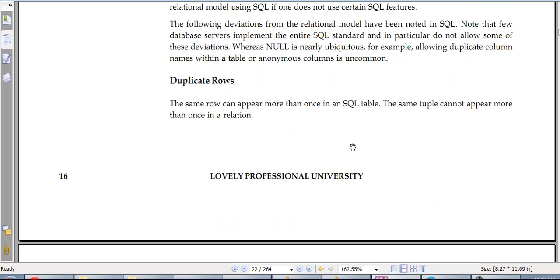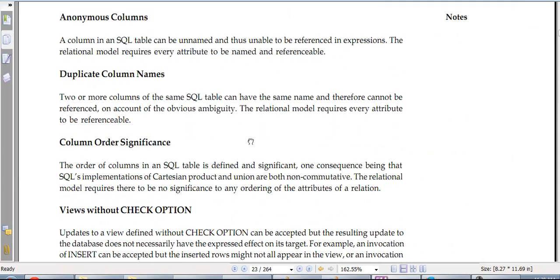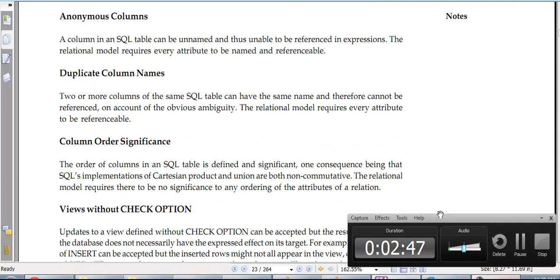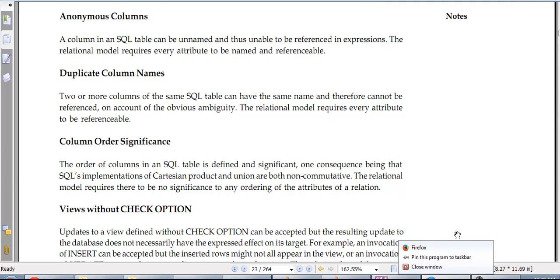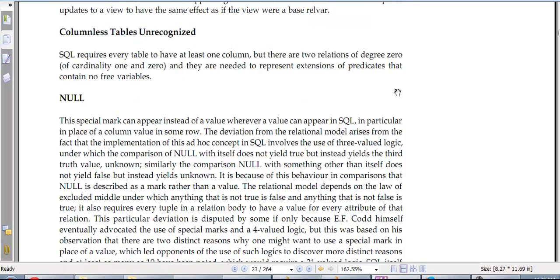The duplicate rows: the same row can appear in SQL. The tuple can appear more than once. Anonymous columns, duplicate column numbers. So this is something that actually happens in SQL but that should not be happening.